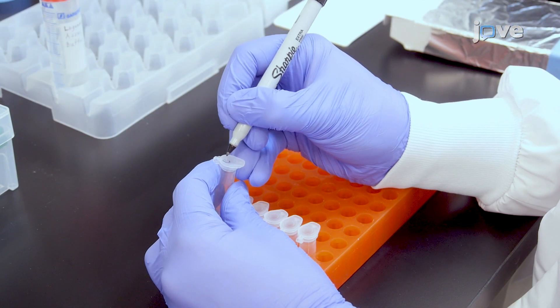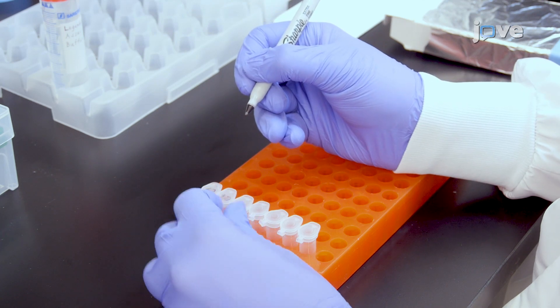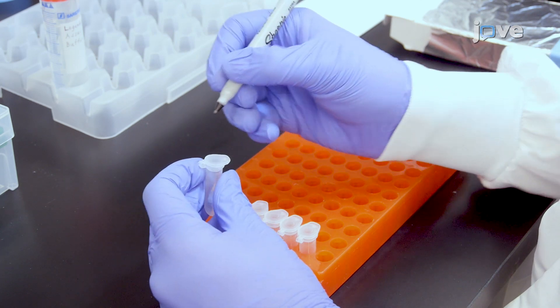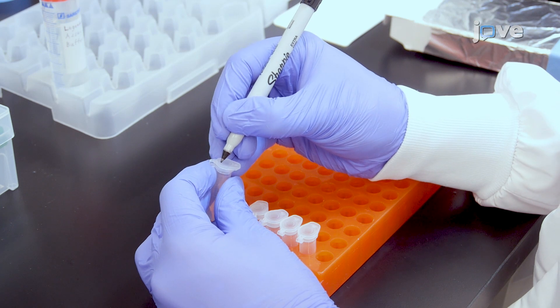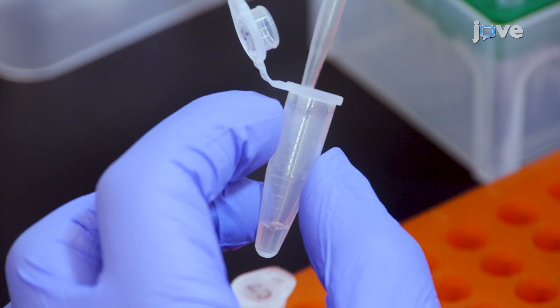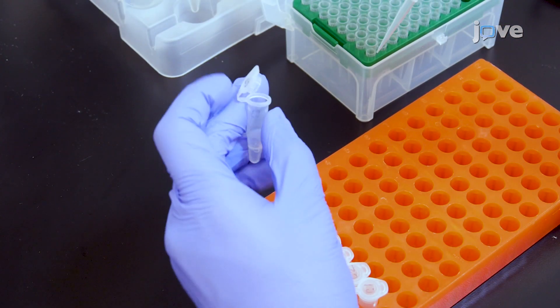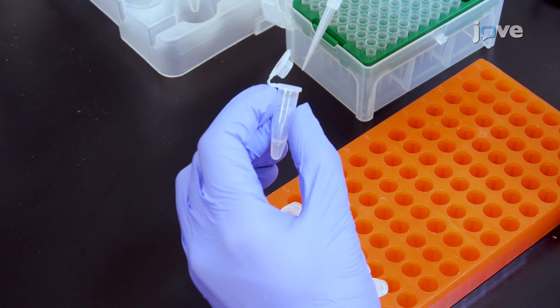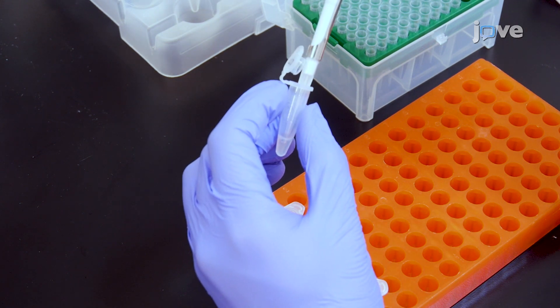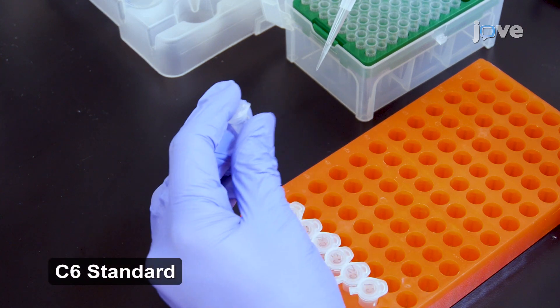Label six polypropylene microcentrifuge tubes as C1 through C6. Add 75 microliters of assay buffer to each of these tubes. Then transfer 25 microliters of the top standard C7 to the C6 tube and mix well by vortexing. This will be the C6 standard.